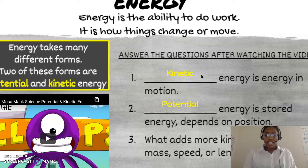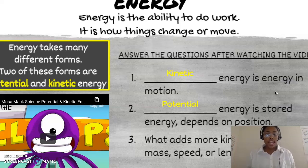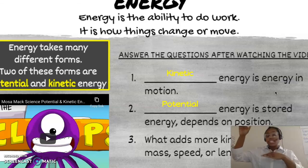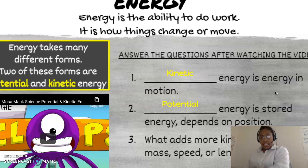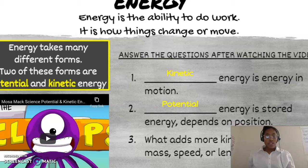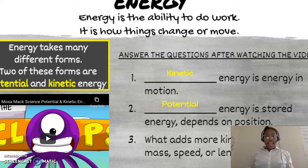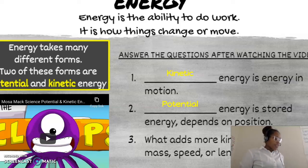Kinetic energy is energy in motion, and potential energy is energy that is stored, dependent on its position. On a roller coaster, it's using potential energy when it's at the top — so it's not moving, it has that energy stored. As soon as it goes down that loop, it is displaying kinetic energy. What adds more kinetic energy — mass, speed, or length? The answer is mass. The higher the object, the more potential energy it has. If you jump out of an airplane, you'd have more potential energy than if you just stood up and jumped up and down.